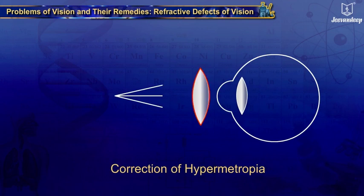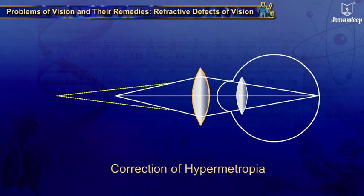This defect can be corrected using a convex lens of suitable focal length.